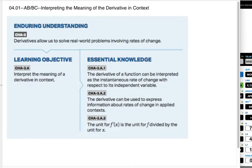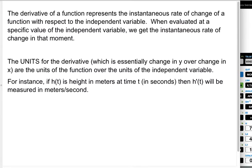So we're going to dive right into some explanation and then some examples. The derivative of a function represents the instantaneous rate of change of a function with respect to the independent variable, which is very frequently time but not always. So when evaluated at a specific value of the independent variable, we get the instantaneous rate of change in that moment.